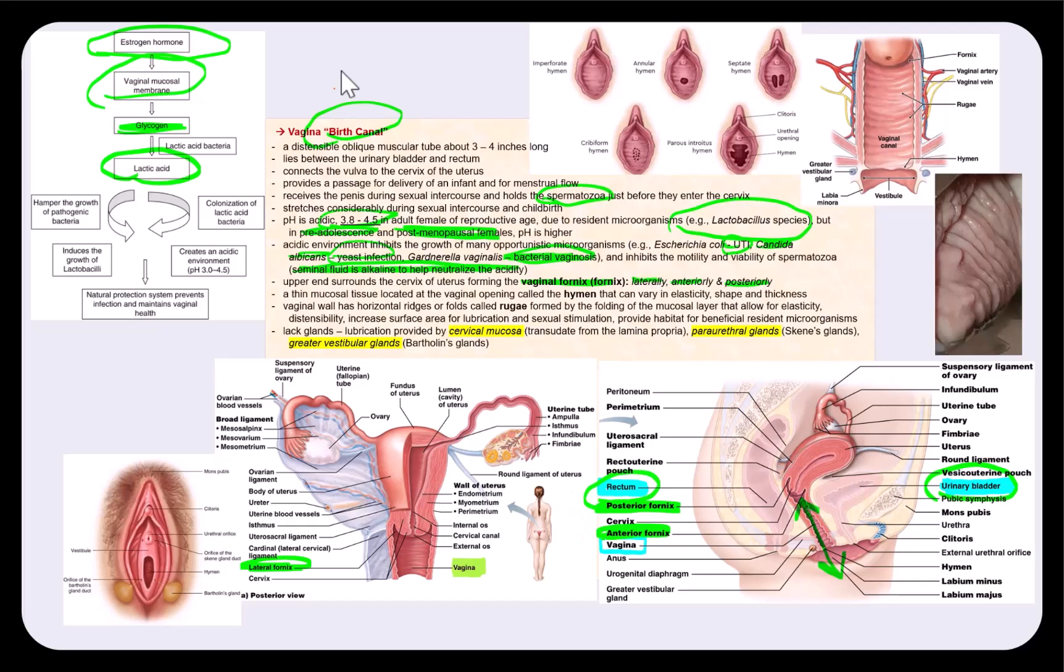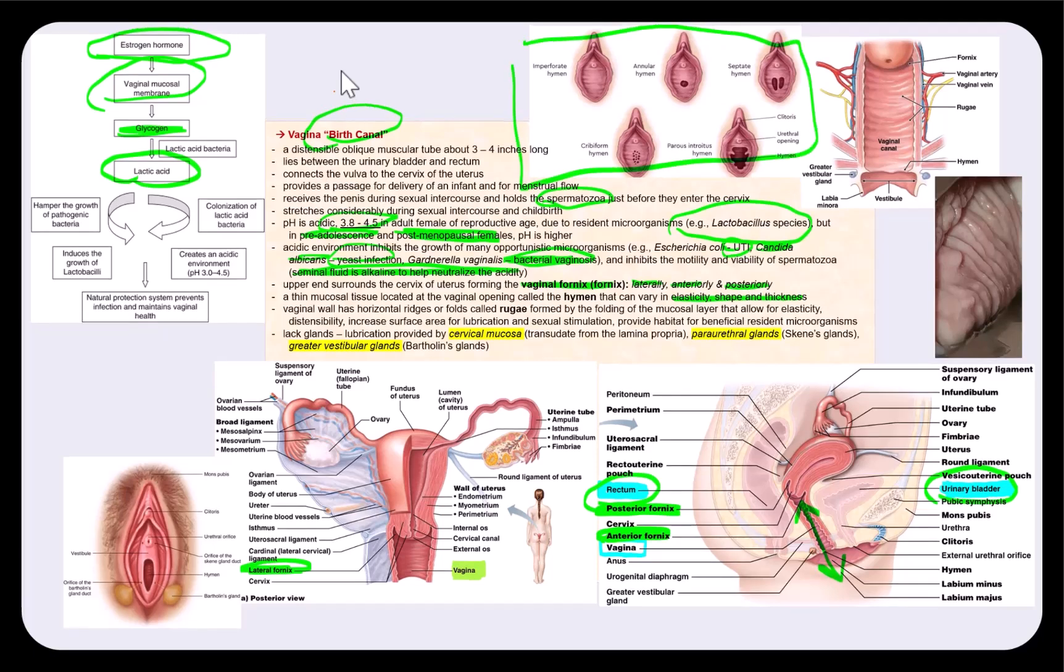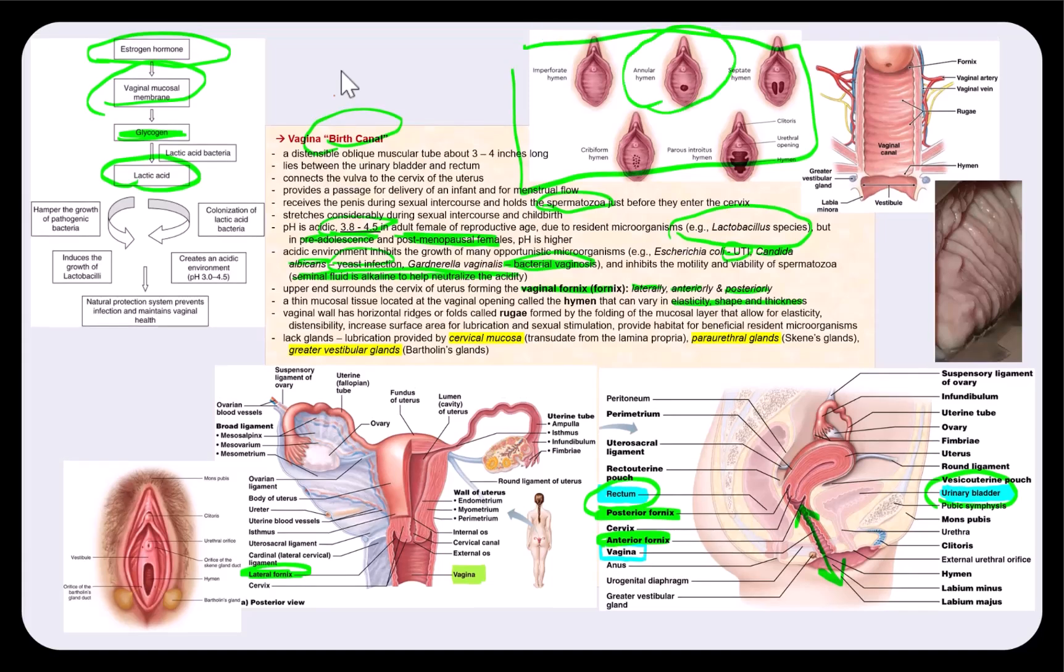A thin mucosal tissue can be found at the vaginal opening called the hymen. This hymen can vary in elasticity, shape, and thickness. Quickly looking at the top image of these different types of hymen, the most common type of hymen found in most females is referred to as the annular hymen. So there is a little tiny opening that allows for menstrual flow. It could also be septated. It could be cribriform, where you have these tiny little openings.